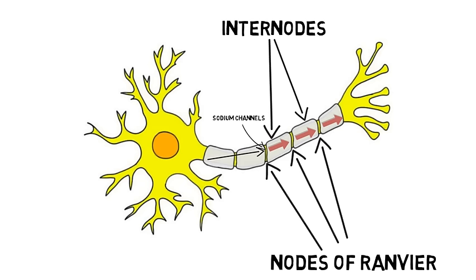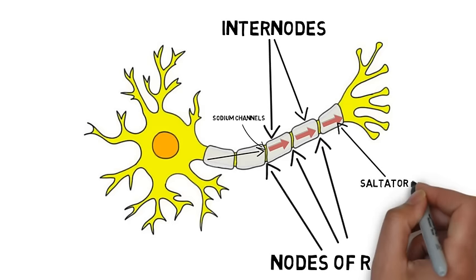Because the nodes of Ranvier are not myelinated, the action potential slows down at each node and speeds up as it travels along the myelinated internodes. This gives the appearance that an action potential is jumping from node to node, which is known as saltatory conduction.